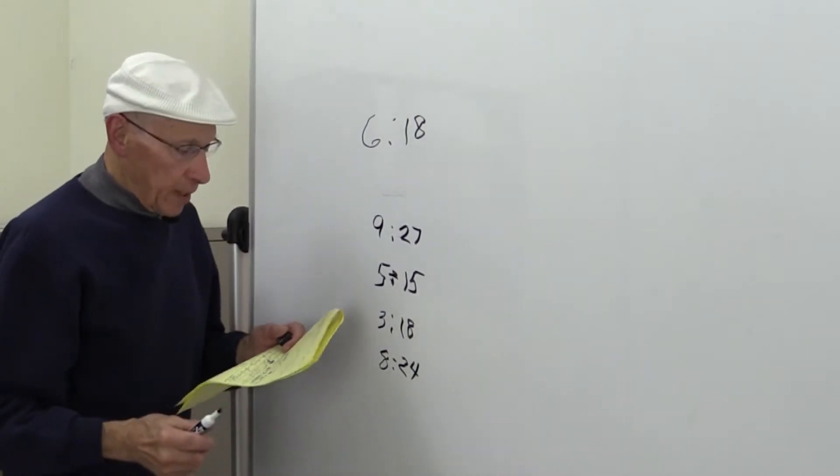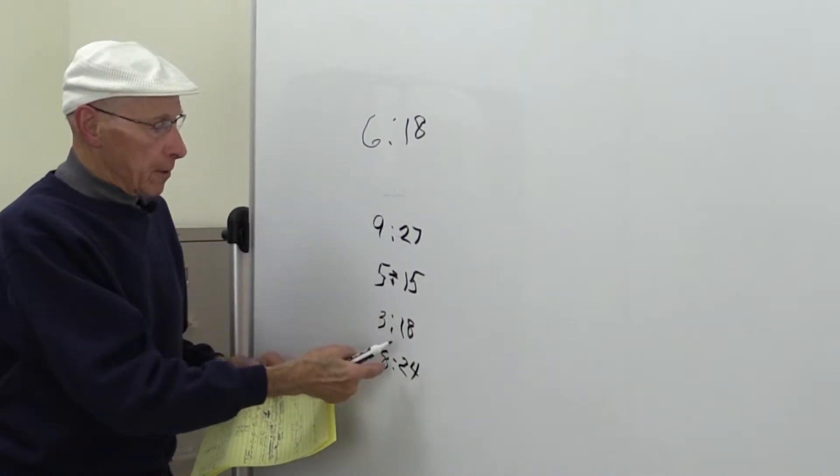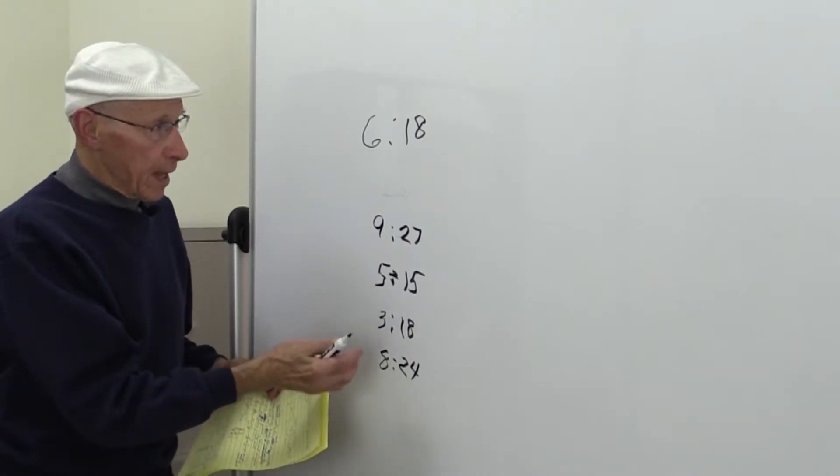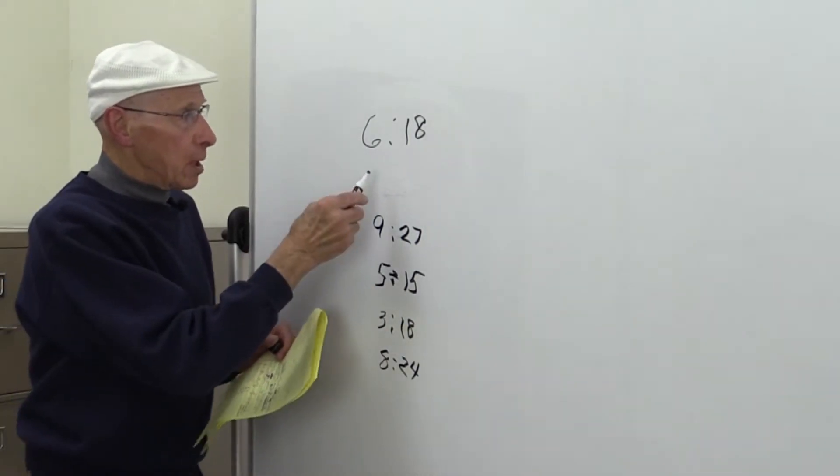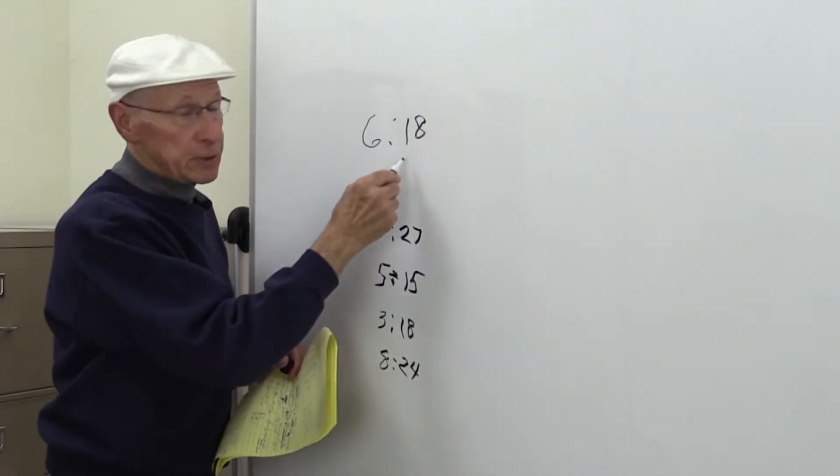Now, so what you have to find out is which ratio here in this four do not satisfy the ratio of 6 to 18. Now 6 to 18, let's change this to a fraction.